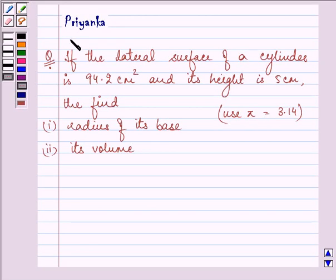Hi and how are you all today? My name is Priyanka and the question says if the lateral surface area of a cylinder is 94.2 cm² and